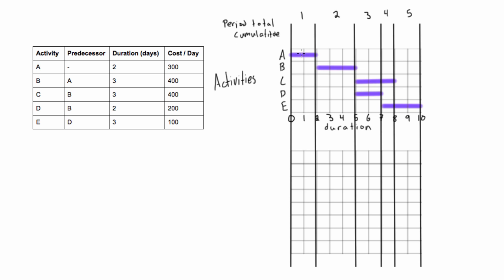In period one, the only activity happening is activity A, which costs $300 per day. Over two days, the period total is $600, and the cumulative cost is also $600. In period two, only activity B is happening at $400 per day over three days, giving a period total of $1,200. The cumulative cost becomes $1,200 plus $600, giving us $1,800.